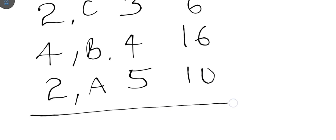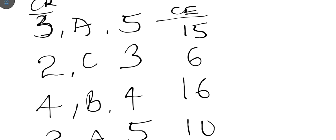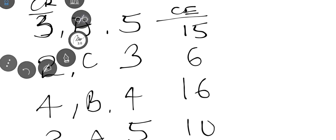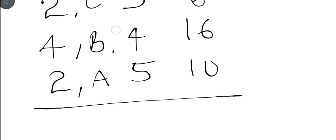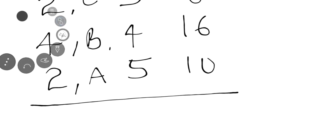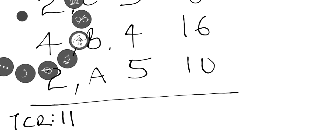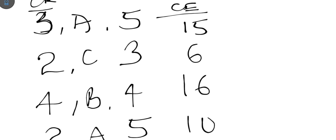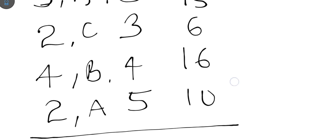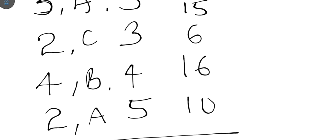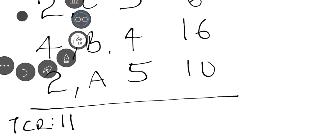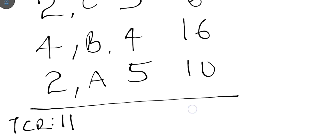Assuming these are the four registered courses for the semester, the total credit registered (TCR) is 3 + 2 + 4 + 2 = 11. The total credits earned (TCE) is the sum of individual credits earned: 15 + 6 + 16 + 10 = 47. So the total credits earned this semester is 47.